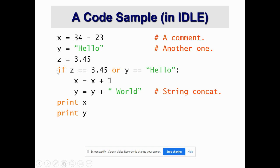Fourth line is an if condition where we are trying to check whether the conditions are true or false. Here, we have or in between. The meaning is if any of this condition, like if z is equal to 3.45 or y is equal to hello. From these two conditions, if any one is true, then it is going to increase the value of x by 1.